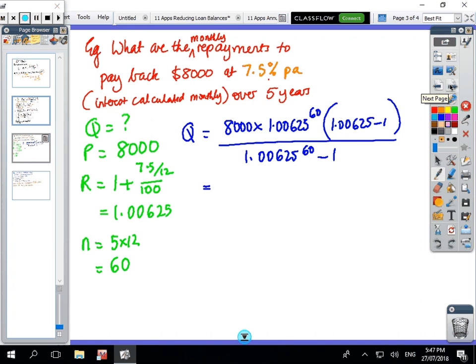Question example: what are the monthly payments to pay back $8,000 at 7.5% per annum, interest calculated monthly, over 5 years? Make sure you understand monthly is different to yearly. So the question is asking what are the payments. We don't know Q. We know P = $8,000. The interest rate R is 1 plus 7.5 over 100 divided by 12, which equals 1.00625. And we've got 5 years but because we've got monthly payments we've got to multiply by 12, so we've got n = 60 periods.